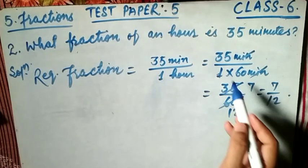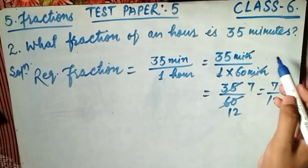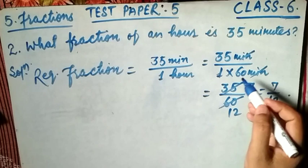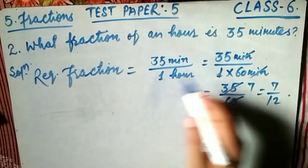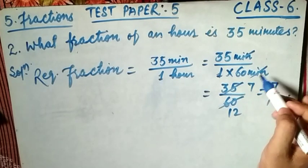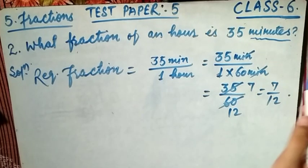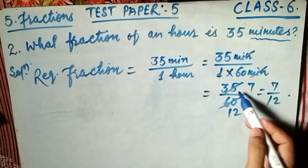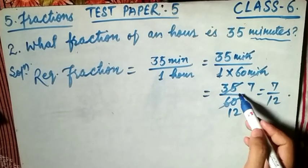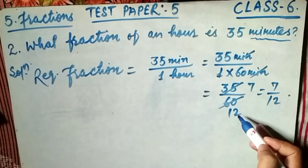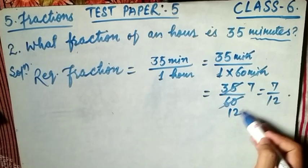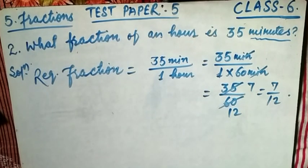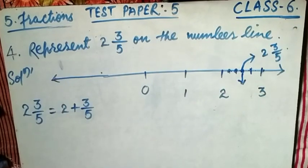We have to change them to the same unit. One hour equals 60 minutes. So the minutes cancel out and we get 35 divided by 60. Simplifying: 5 divides both 35 and 60, giving 7 by 12. So 7/12 is your final required fraction. I hope you understand.